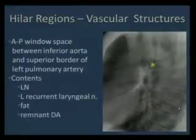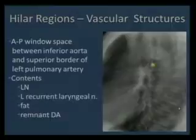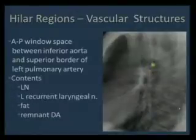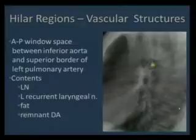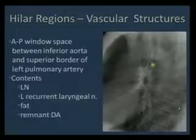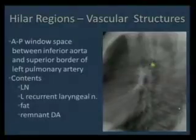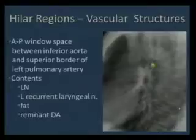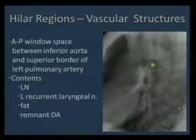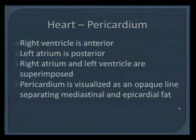The aortopulmonary window is clearly seen on the frontal view below the aortic knob and above the left ventricle. On the lateral view, the space between the aorta and the pulmonary artery represents the aortopulmonary window. It is not normally seen on the lateral view except in patients with COPD or emphysema. The content of the aortopulmonary window includes lymph nodes, the recurrent laryngeal nerve, and fat tissue.